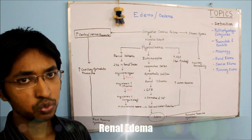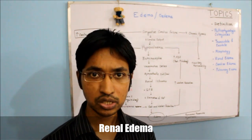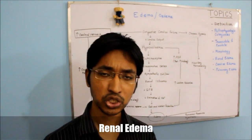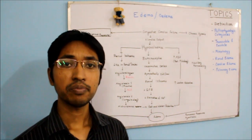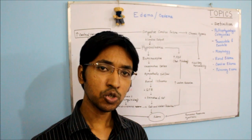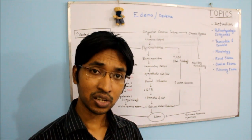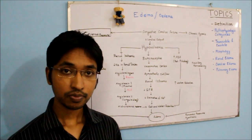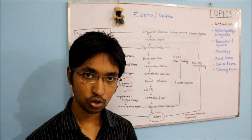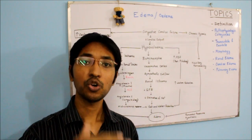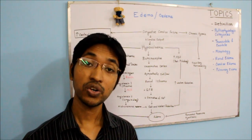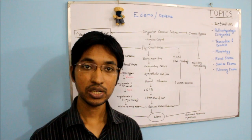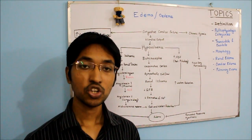Regarding renal edema, in nephrotic syndrome there is massive loss of protein — particularly albumin — resulting in massive proteinuria. Since albumin plays a very important role in exerting plasma colloidal osmotic pressure, loss of albumin reduces plasma colloidal osmotic pressure, which then leads to edema.